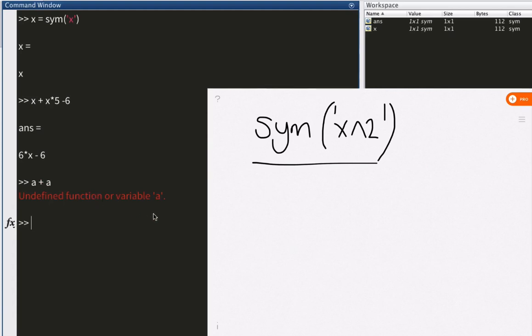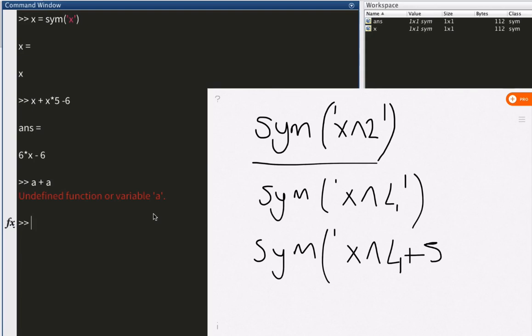Also you can do even crazier complications, something like this. For example, you say sym and you would add x to the fourth power. You can do whatever you like. You can even insert a huge function here, a huge equation, sorry. For example, something like this. x to the fourth power plus 5 times x minus 8. And that will just work out fine.